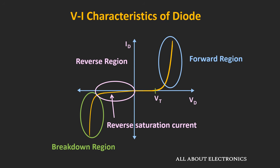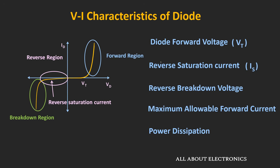For any normal signal diode, the breakdown region of operation should be avoided. In the datasheet, you will find the maximum breakdown voltage specified — the applied reverse voltage should be kept below this value. In the forward region, as the voltage across the diode increases, the current increases exponentially. Datasheets also specify the maximum allowable forward current, and the diode current should remain below this value. These are key parameters found in any diode datasheet.